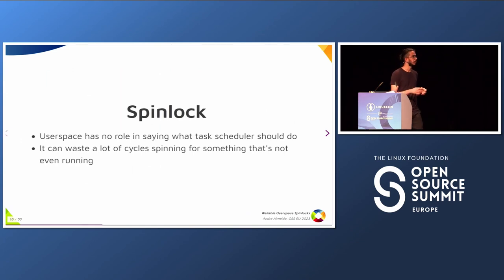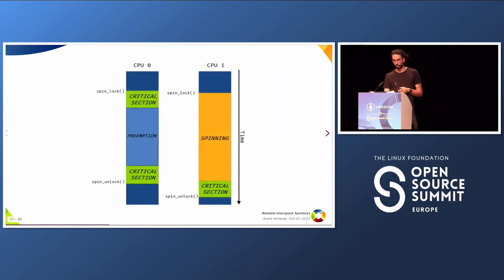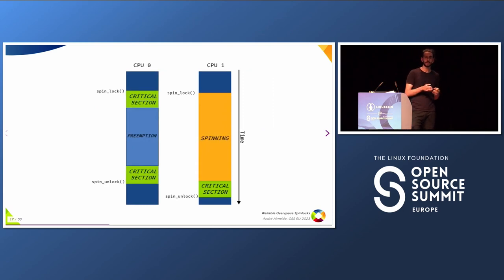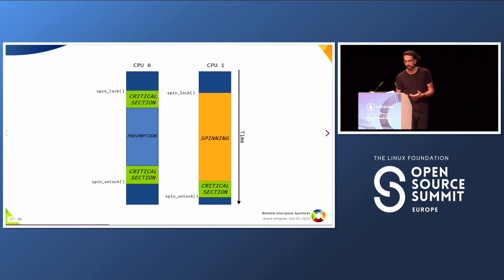But it's not that simple, because user space has no role in controlling what the task scheduler does. That means we can waste a lot of cycles spinning for something that is not even running. Let's say CPU 0 gets a lock and the task scheduler decides to preempt the thread in the middle of the critical section to do some other work. Meanwhile, CPU 1 is spinning — but this is just a waste of CPU cycles, because you're spinning for something that is not going to be available.